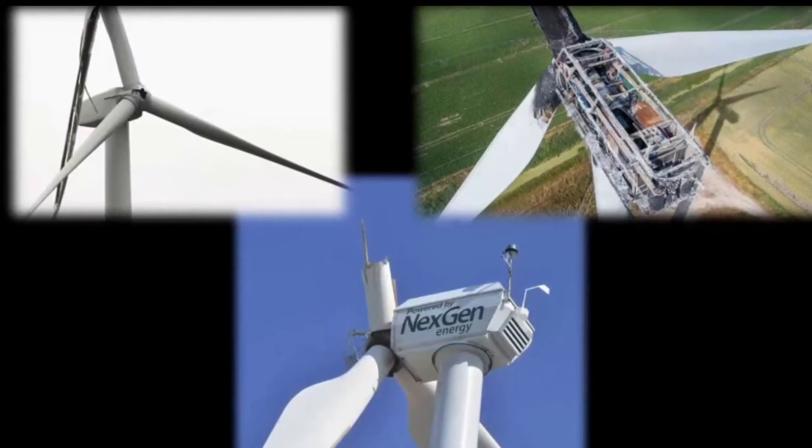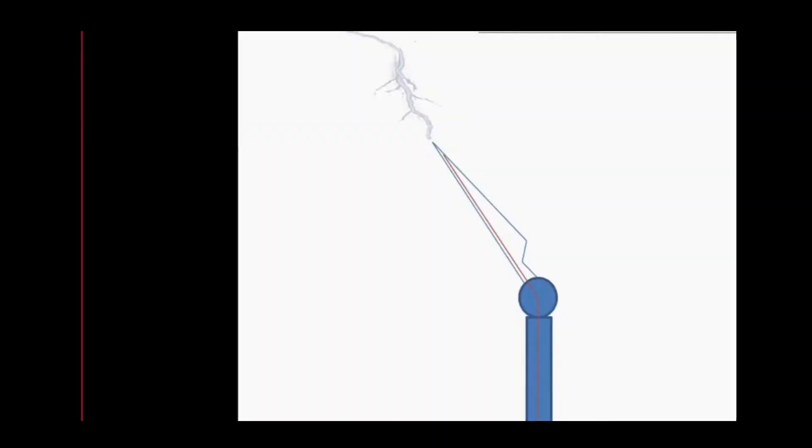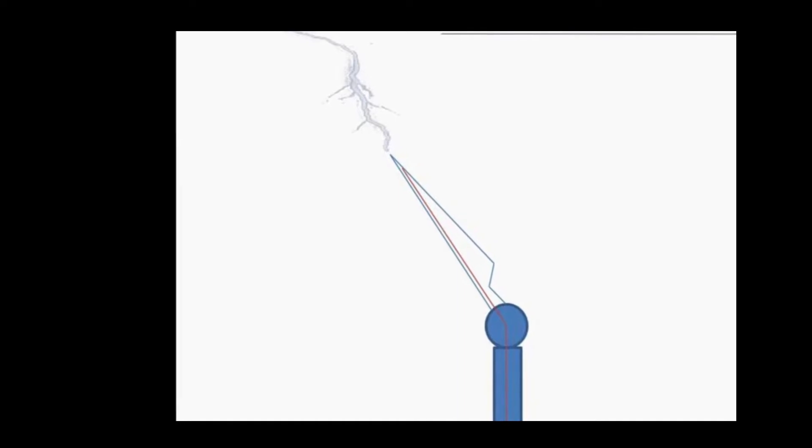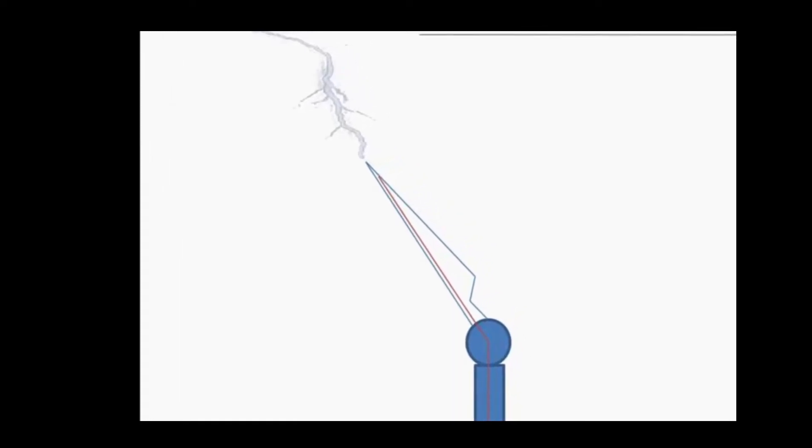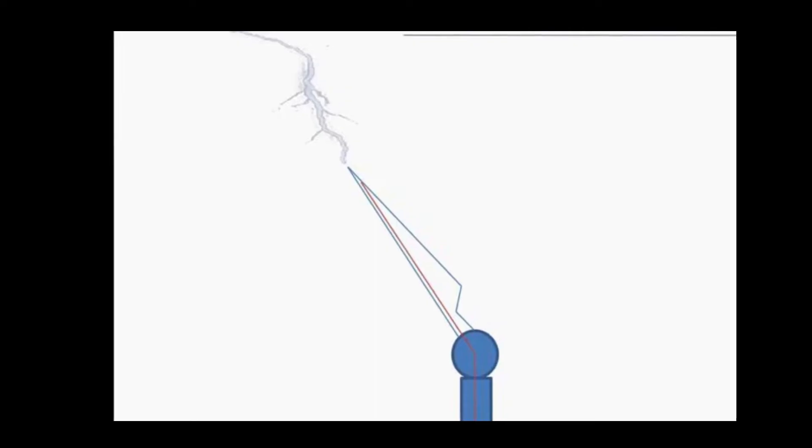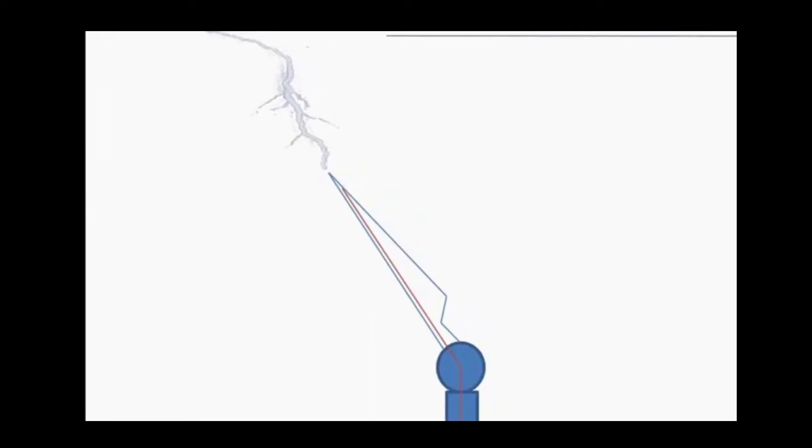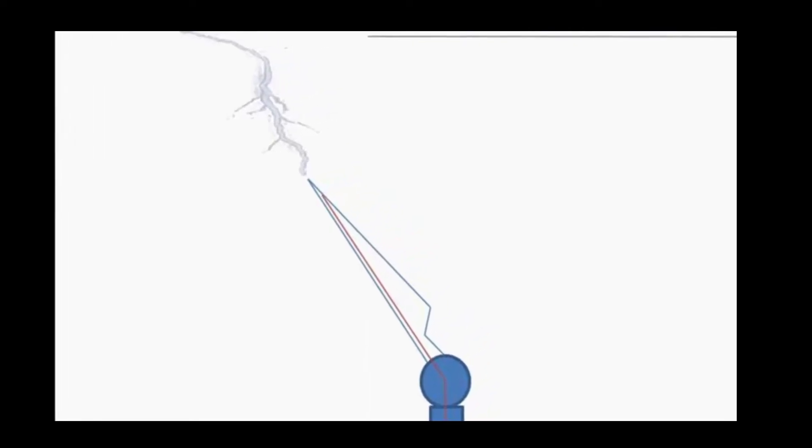How can lightning cause so much damage? Let's explore the physics of lightning strikes on wind turbines. When the strike hits a wind turbine, it will likely find its way to the tip of the blade pointing up. The sky will discharge through the blade and the tower.